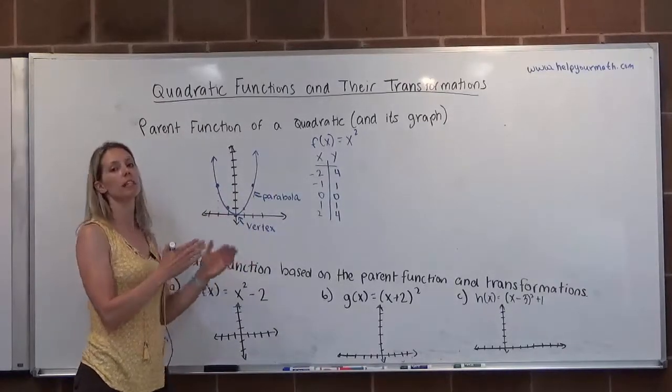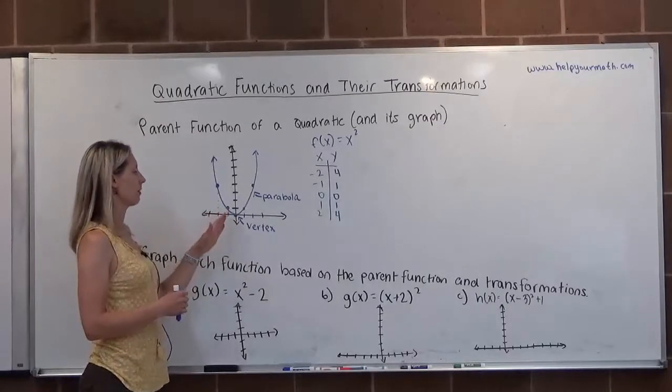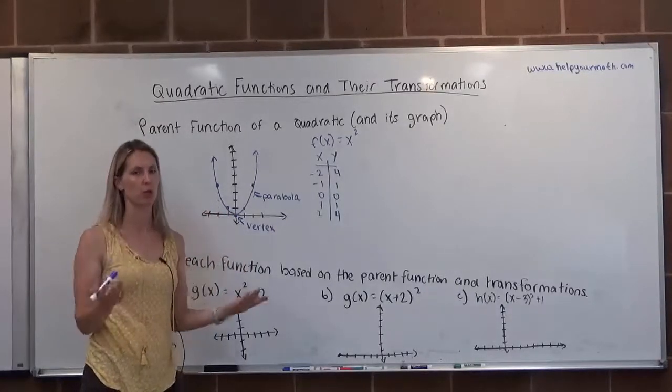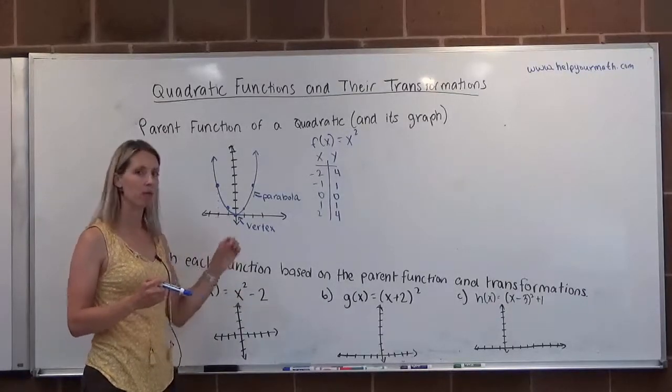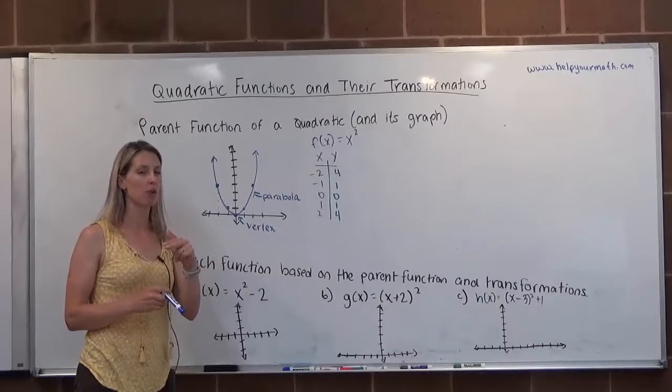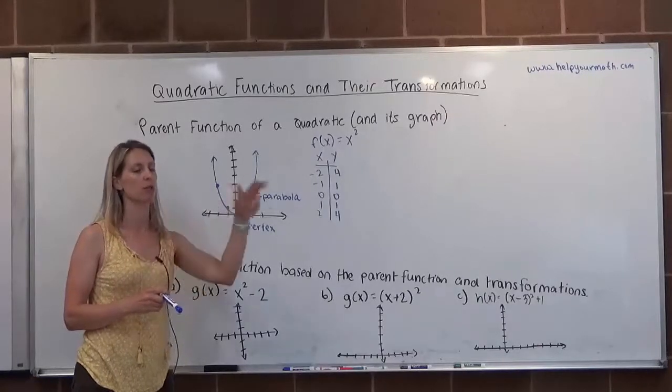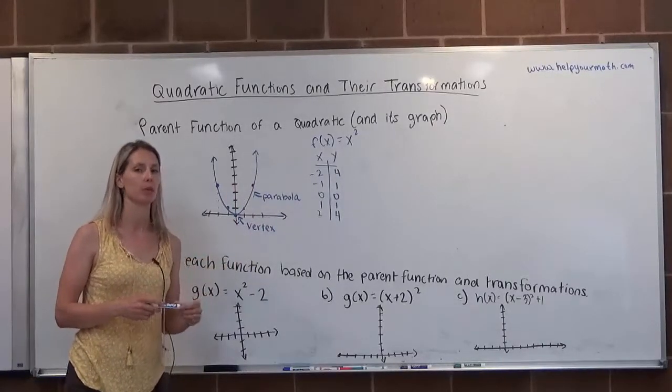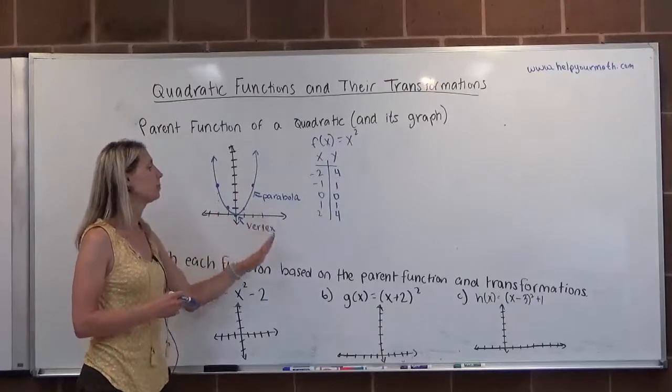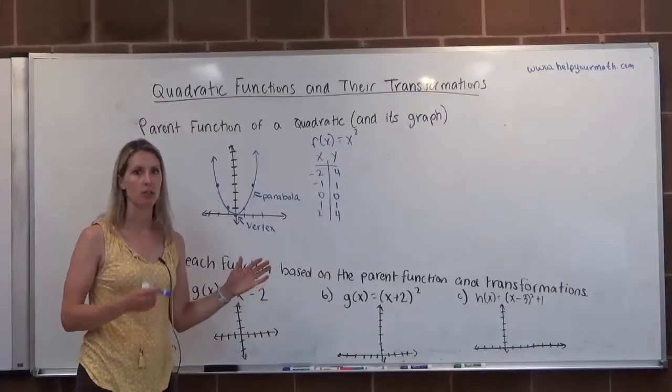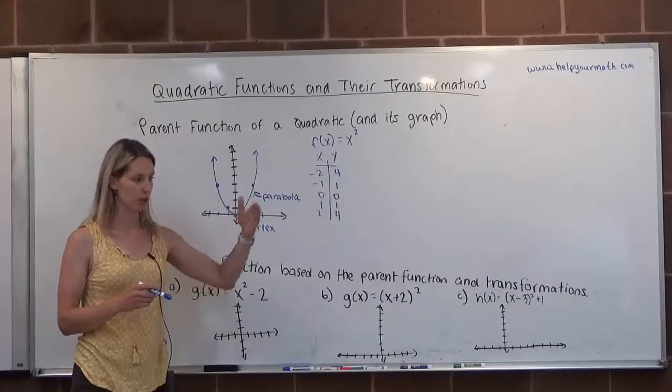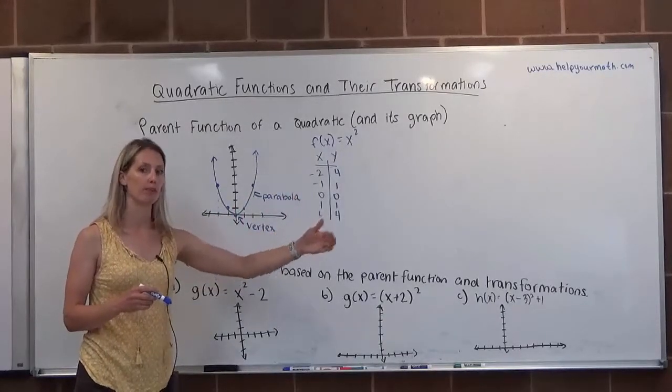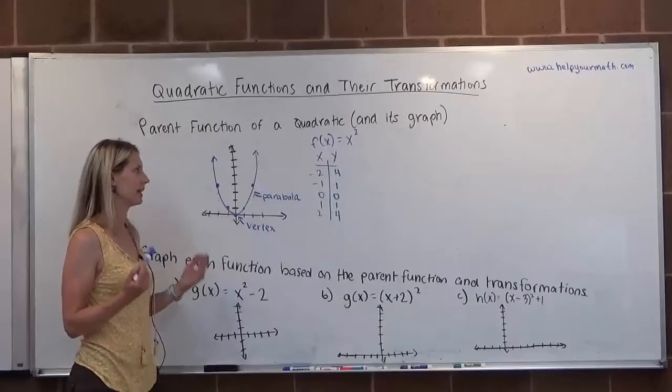So generally when we're graphing quadratics, we graph it and we move it based on where the vertex moves to. So if we know the vertex, if you have some ideas as to how to find the points near it, you can just use those ideas. Otherwise, I always suggest making a table of values around the vertex. You want to use two numbers that are just smaller than the x-coordinate of the vertex and two numbers that are bigger than the x-coordinate of the vertex. So if the vertex moves to, let's say, three, and you want to do a table of values, I would suggest using x equals one and two, three is your vertex, and then also four and five.